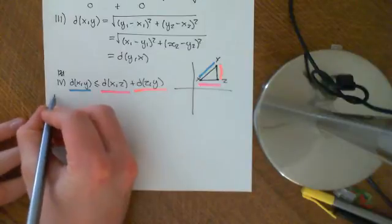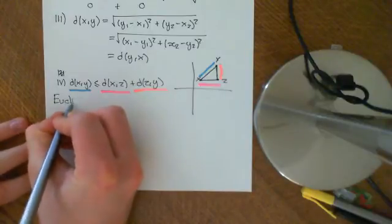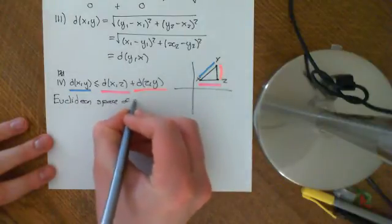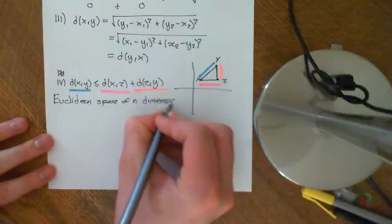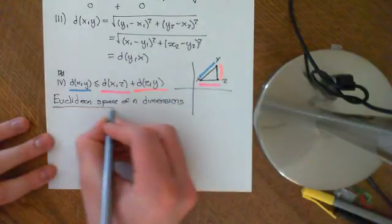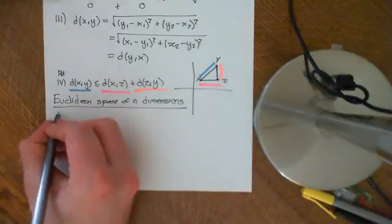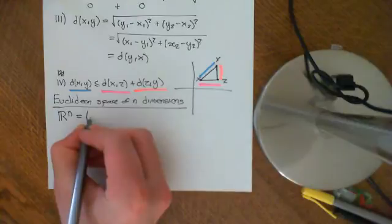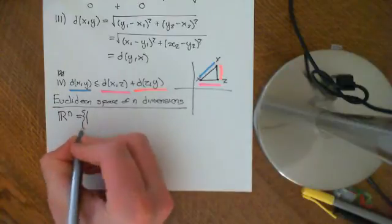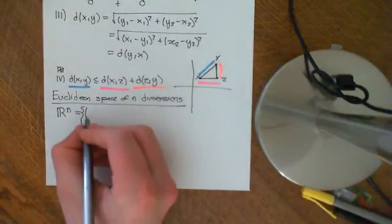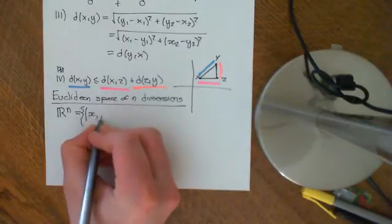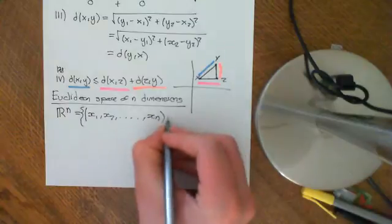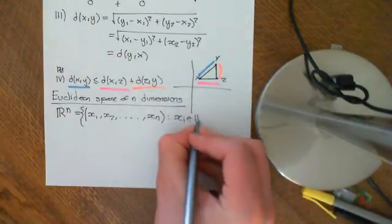Firstly, we start with the set. Euclidean space of n dimensions. So the first thing is that we start off with a set, which is Rⁿ — the set of n-tuples of real numbers: (x₁, x₂, ... , xₙ), where all the xᵢ's are elements of the real numbers.